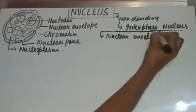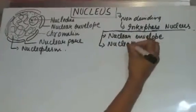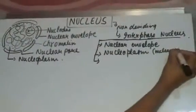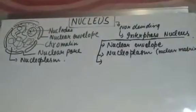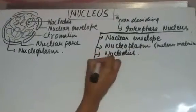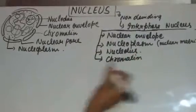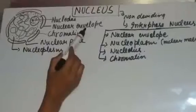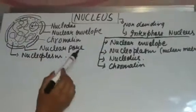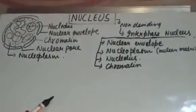The structure of the nucleus includes: first, the nuclear envelope; second, the nucleoplasm; third, the nucleolus; and fourth, chromatin. The nucleus has an outer covering called the nuclear envelope, a thread-like structure called chromatin, pores, and a liquid interior called the nucleoplasm.